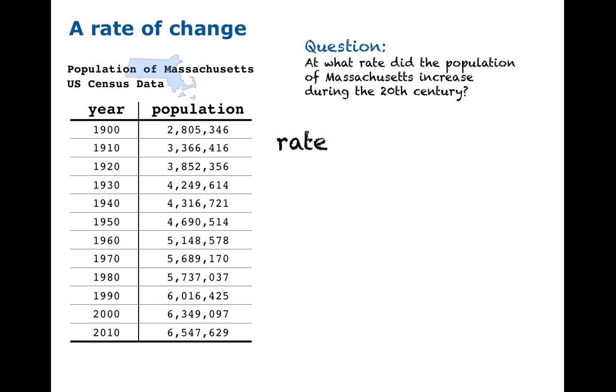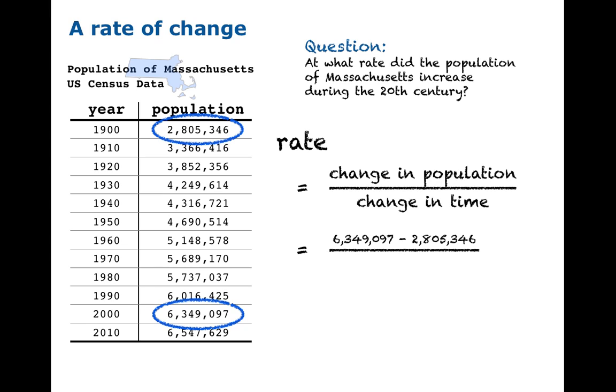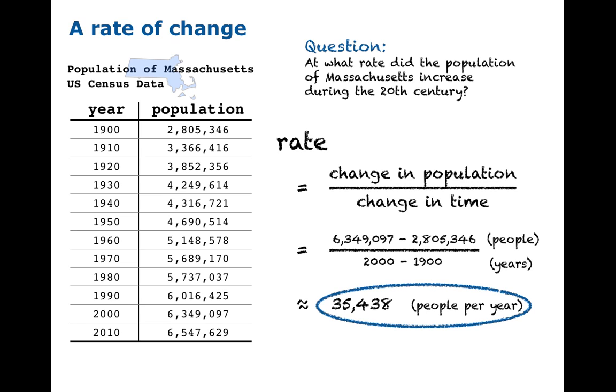One question you could ask is at what rate did the population of Massachusetts increase during the 20th century? So we're looking for a rate, a ratio, a change in population divided by a change in time. We want the population at the beginning and end of the century, and we'll take that difference and divide by the change in number of years. The population is measured in units of people and time is measured in units of years. So when we take the quotient, there's a natural unit to use and that is people per year. So the answer to our question is 35,438 or so people per year.